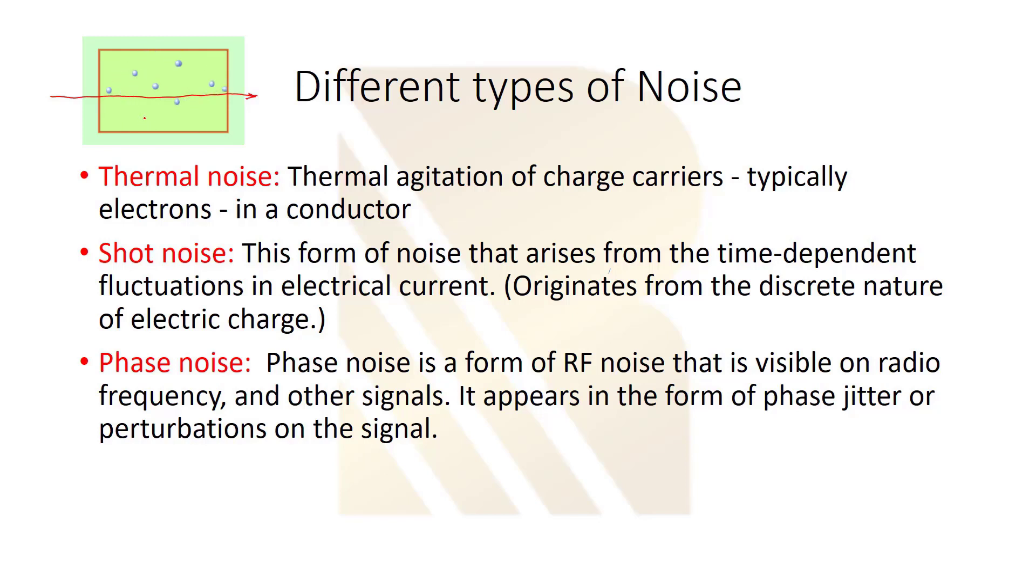The second one is shot noise. This form of noise arises from the time-dependent fluctuation in electrical current. This noise originates from the discrete nature of charge, which has a random movement and fluctuation.